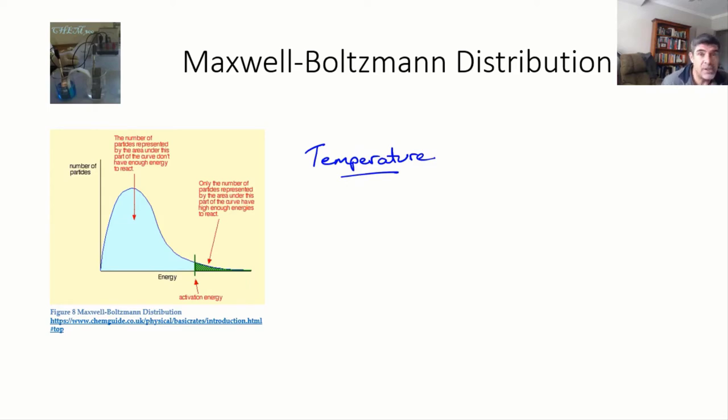This distribution that you can see on the slide here is called the Maxwell-Boltzmann distribution. And you can see that there's a point where we always talk about the average kinetic energy of the particles,